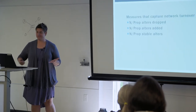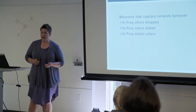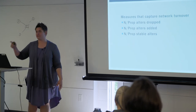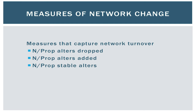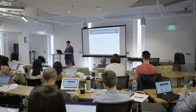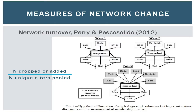I'm going to talk about some of the most common and useful measures of network change. You can capture network turnover by distinguishing between the proportion of alters dropped from one wave to another, the proportion or number of alters added, and the proportion of stable alters. You can't put all the proportions in the same model — the ends are going to be correlated, so you have to be careful. The way we conceptualize it so you can add all this information into one nice measure is a network turnover measure.